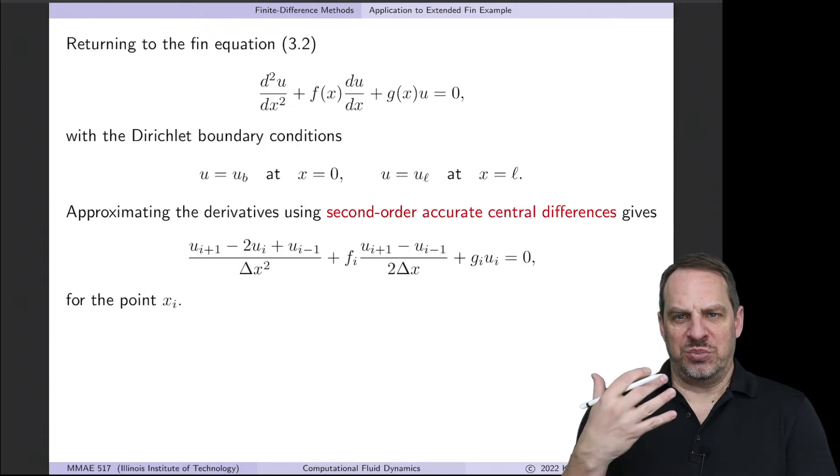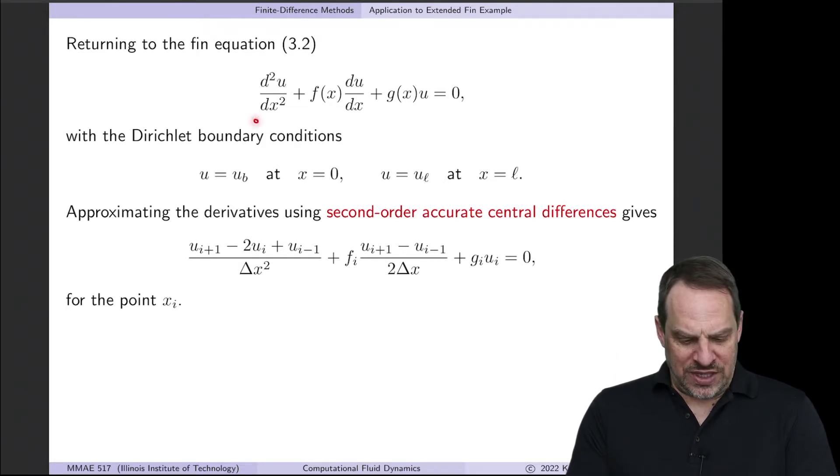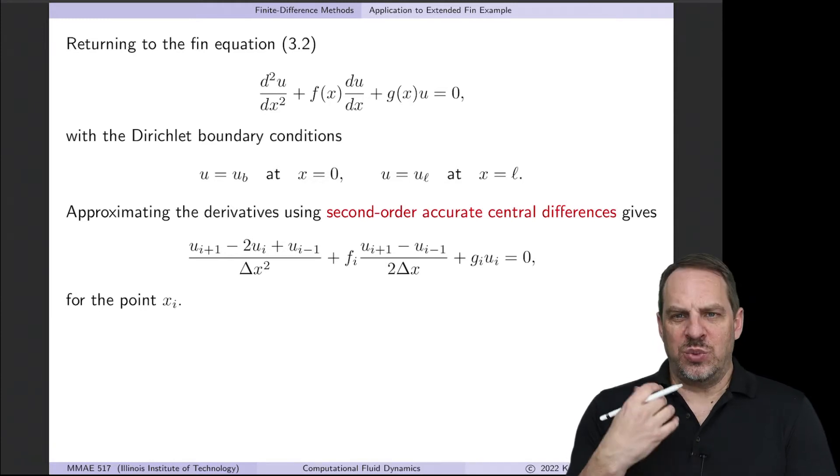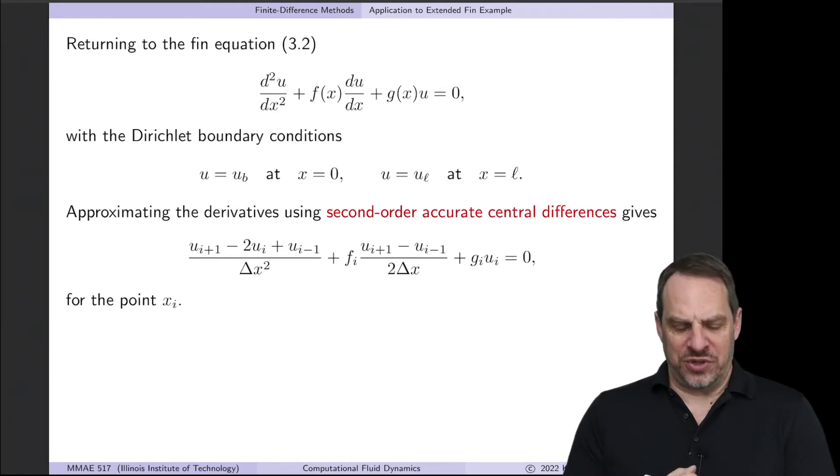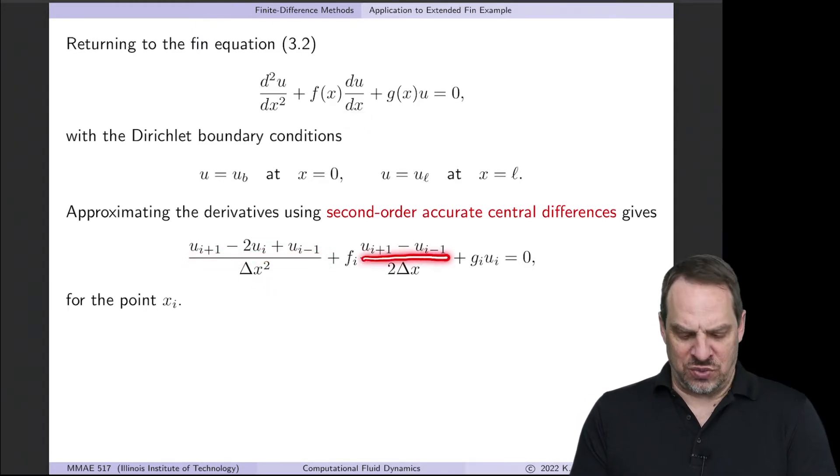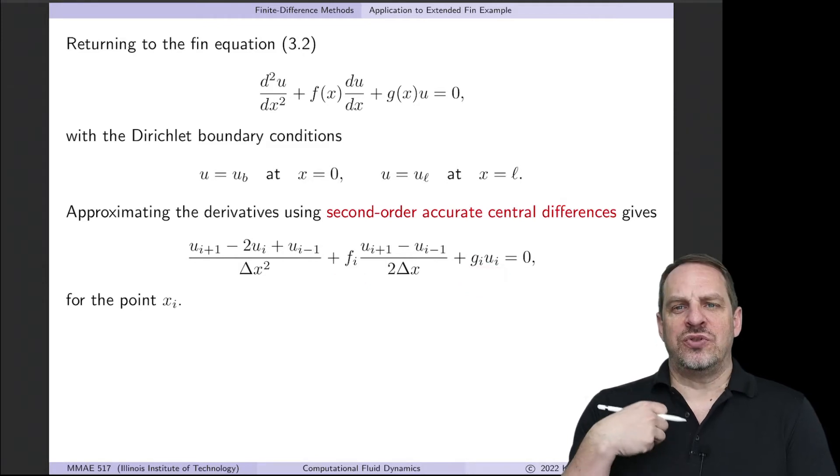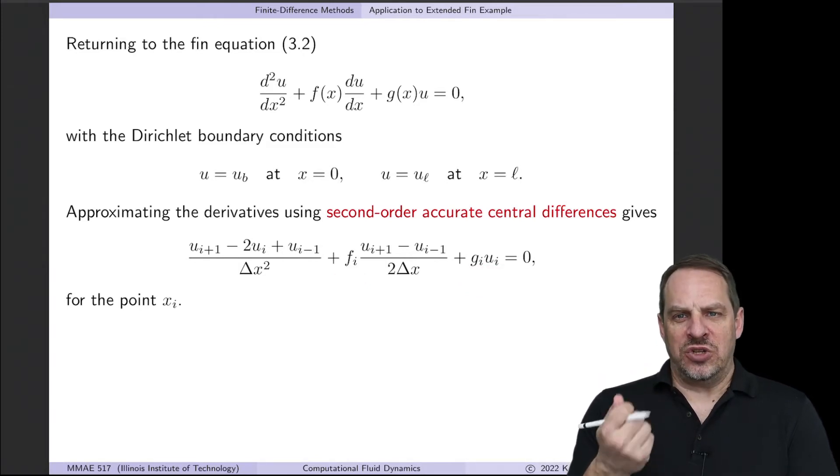And so what we're going to do now to complete step two is to take this second derivative and this first derivative and use central difference approximations in order to obtain our system of equations. And we derive both of these in the previous video. So for d squared u dx squared, we have u at i plus 1 minus 2 ui plus ui minus 1 over delta x squared. For du dx, we have ui plus 1 minus ui minus 1 over 2 delta x's. And remember f sub i, g sub i, and u sub i are shorthand for f, g, and u evaluated at the point x sub i.